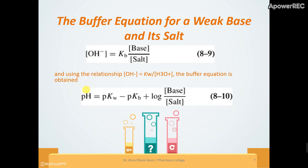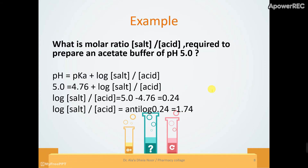So we use the buffer equation of the weak base to find pH. Example: what is the molar ratio of salt over acid required to prepare an acetate buffer of a given pH? Here, the pH is already given — we need to find the ratio of salt to acid.